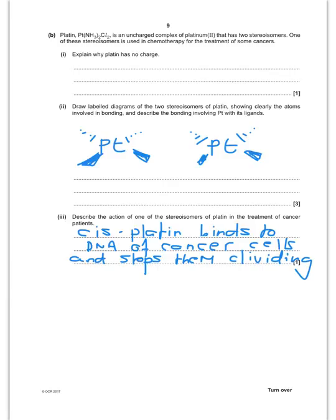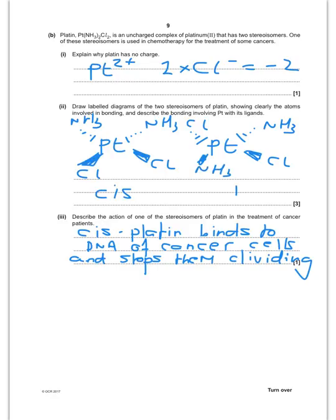Right, so, platinum, uncharged platinum 2 complex, why does it have no charge? Well, platinum is in the oxidation state of plus 2 and you've got 2 Cl minus ligands, which adds up to minus 2. And therefore, overall, plus 2 minus 2 equals 0. Draw labelled diagrams of the two stereoisomers. So, you can have an NH3 there, NH3 there, Cl, Cl there. Or you could have Cl, Cl, NH3, NH3. This one is a cis and this is the trans isomer. Now, describe the action of one of the stereoisomers of platinum in the treatment of cancer. Well, it's cisplatin, you'll remember, that binds to the DNA of cancer cells and stops them dividing.